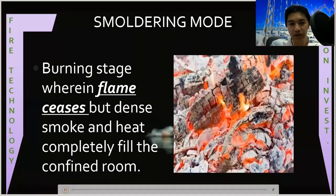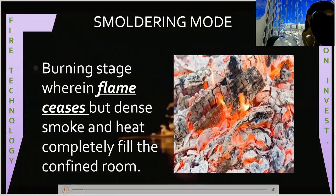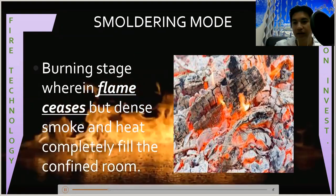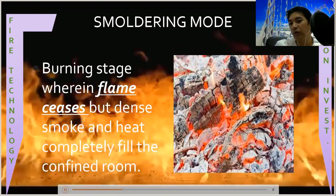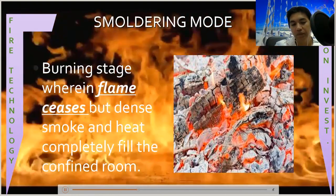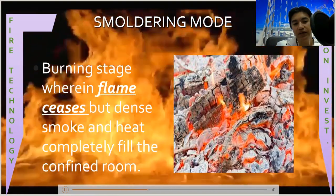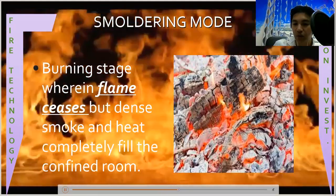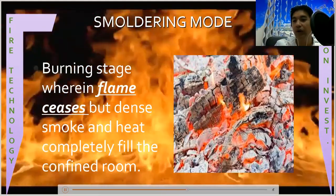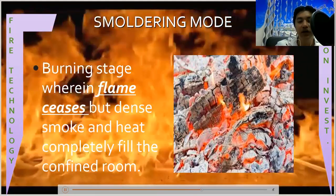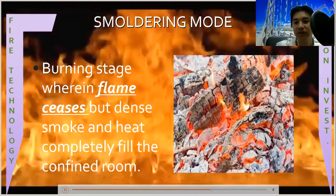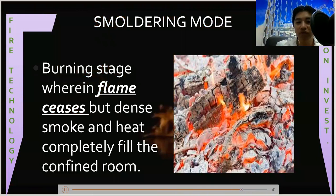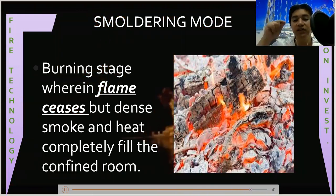The next stage is the smoldering mode. This is when the fuels are already consumed — a burning state wherein flame ceases, but smoke and heat completely fill the confined room. What we can see is there is no fire, but there is light and heat because the flame is ceasing. What we can only see is the smoke.